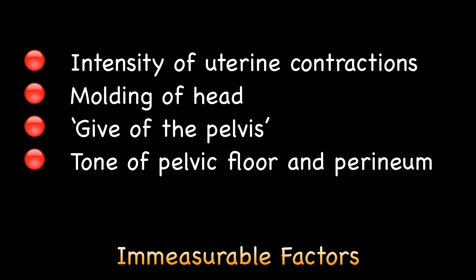Besides the essential diameters of the pelvis judged by clinical pelvimetry or measured by X-ray pelvimetry, there are other immeasurable factors of overriding importance in labour: good uterine contractions that can push the head into the pelvis, moulding of the head which reduces diameters of the fetal head, give of the pelvis that increases the pelvic diameters slightly, and tone of pelvic floor and perineum which, if pliable, will facilitate vaginal delivery. It is the presence of these immeasurable factors which has made many obstetricians consider cephalopelvic disproportion as a retrospective diagnosis, and is also the reason why we can give a trial of vaginal delivery in a case of borderline contracted pelvis.